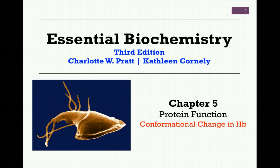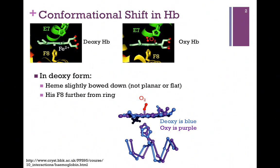We're continuing our studies in Chapter 5 on protein function, and in this lesson we'll be concerned with the conformational change that occurs in hemoglobin to convert it from a low binding affinity form to one with high binding affinity. Here we have figures from the website location given at the bottom. On the left we have the deoxy form of hemoglobin, on the right the oxy form, and on the bottom a figure from your book illustrating the same thing from a different perspective.